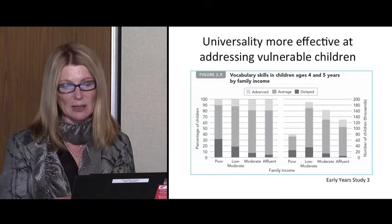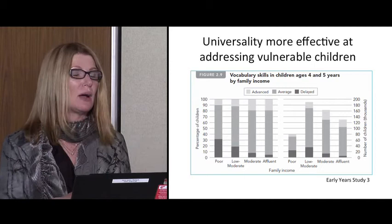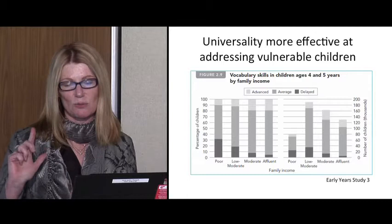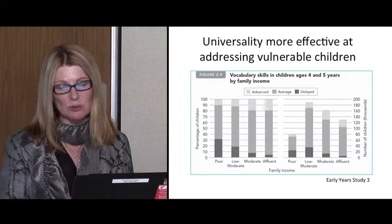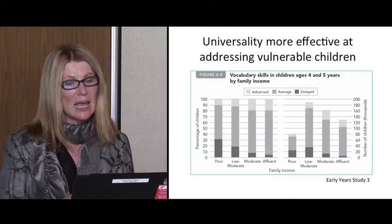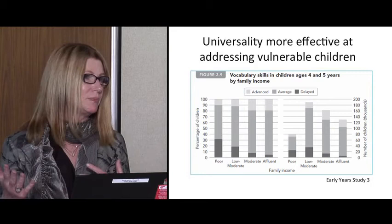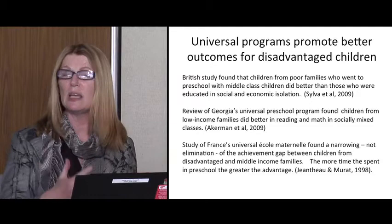Looking at information from the NLSCY, we again see that gradient where children from low-income families are more likely to experience vulnerabilities. But when we look at the actual numbers of children, we see that when you add up children from affluent, moderate, and low-moderate families, they actually outnumber the children with vulnerabilities from low-income families. This chart looks at vocabulary skills, but we see the same trends whether we're looking at numeracy or social skills.